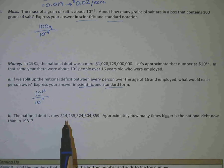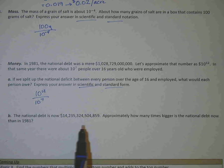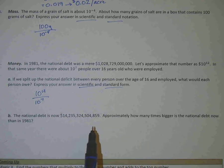The national debt now is $14 trillion, blah, blah, blah. A lot of money. So approximately how many times bigger is the national debt now than in 1981? I'm going to let you go ahead and figure that one out.